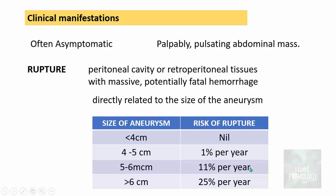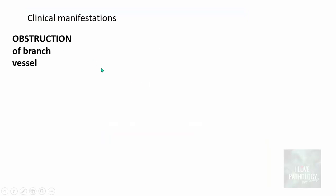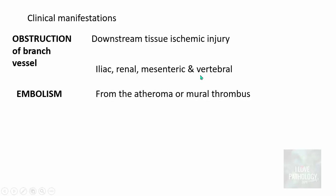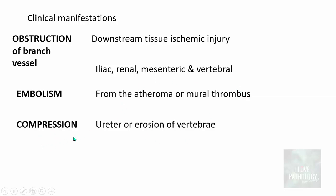The risk of rupture increases to 25% per year if the aneurysm is more than 6 cm. Other important effects include obstruction of branch vessels leading to downstream tissue ischemic injury — for example, obstruction of iliac, renal, mesenteric, or vertebral vessels. The third effect is embolism from atheroma or mural thrombus within the aneurysmal sac. Compression of the ureter or erosion of vertebrae can also be manifestations of abdominal aneurysm.